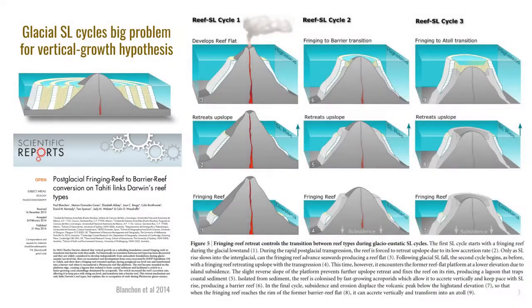This sequence isn't completely accurate because Darwin didn't know about the glacial oscillations of sea level that occurred during the last two million years. During the Pleistocene, sea level is the main driver of this reef sequence, not subsidence. I've shown how these glacial sea level oscillations impact reef development in a previous paper and YouTube video listed in the credits. But regardless of how we actually get there, the sequence is correct and fringing reefs do indeed transform into barriers and atolls through time.